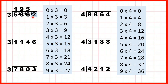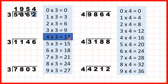So now we have 12 divided by 3. Now 12 is in the 3 times table — it's exactly 4 times 3. So 4 is the last digit of our answer. And because it's exactly 12, we don't have a remainder. So our answer is 1,954.